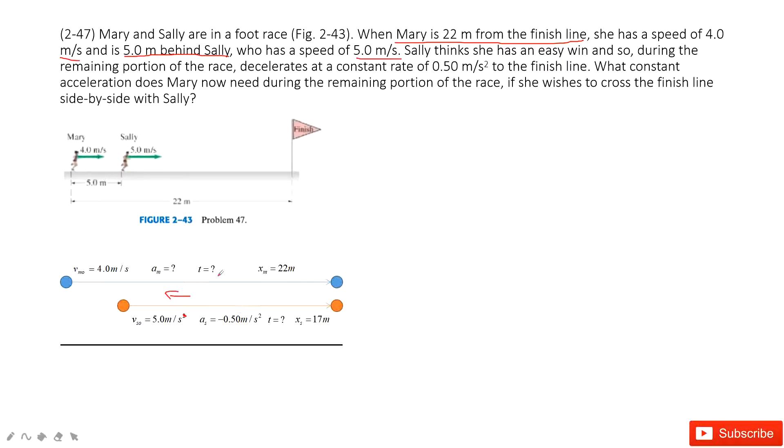What constant acceleration does Mary now need during the remaining portion of the race if she wishes to cross the finish line side-by-side with Sally? That means when they reach the finish line, the time taken is the same.